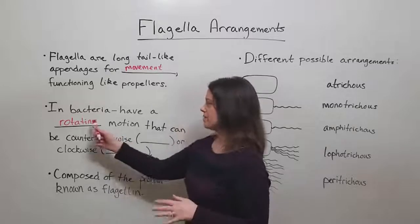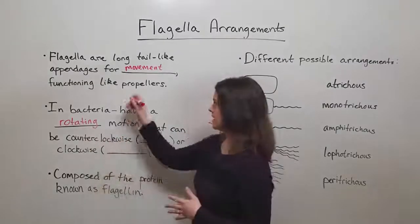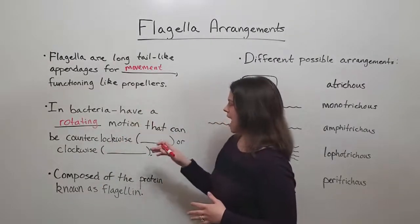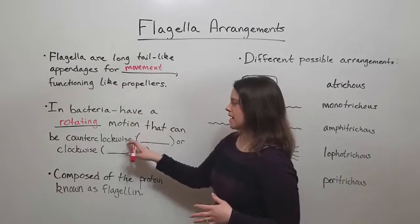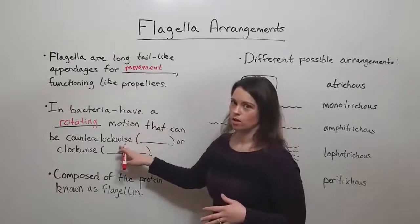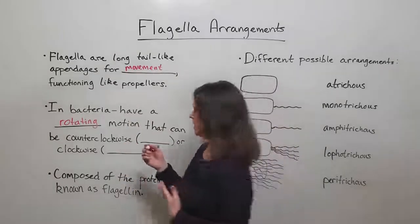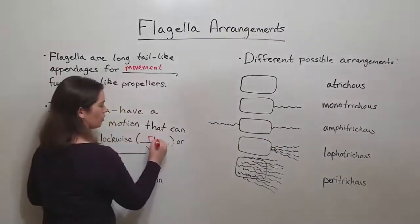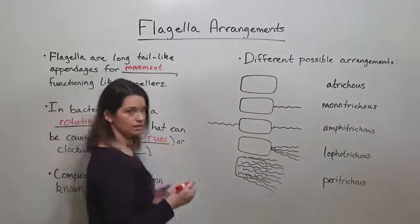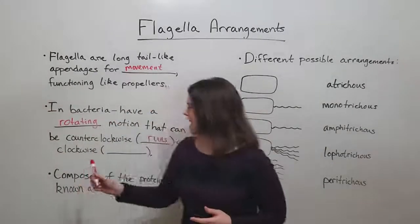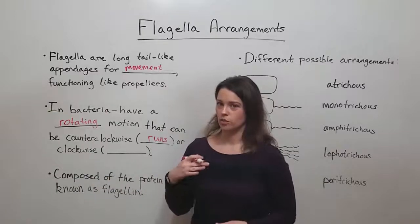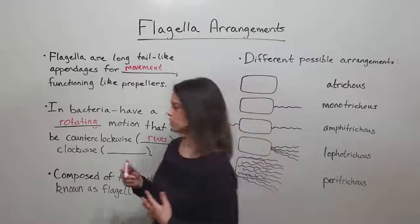In bacteria, it rotates, so it really is like a propeller. It can rotate in a counterclockwise direction in order to cause what are known as runs, and it can move in a clockwise direction to cause what are known as tumbles.